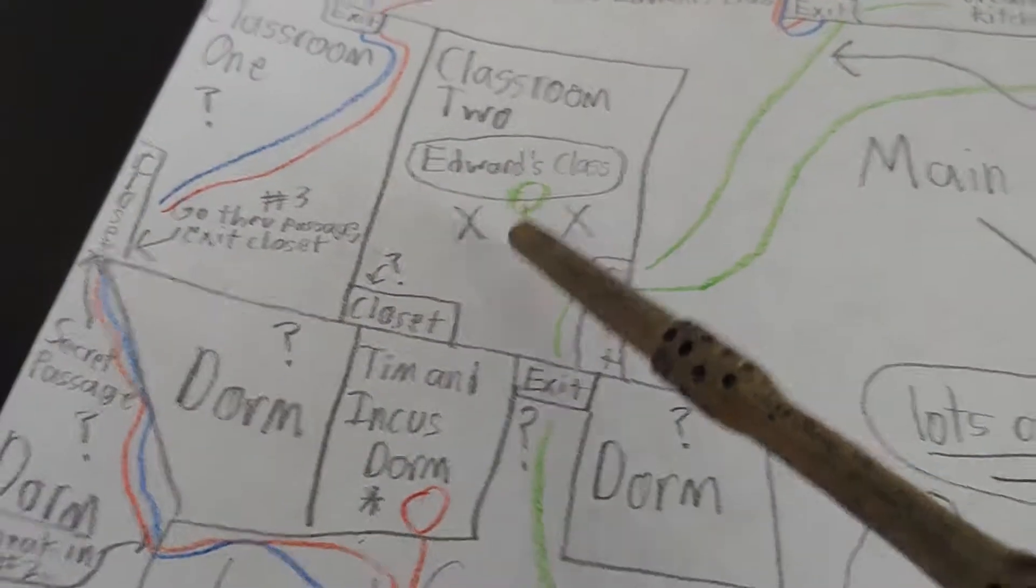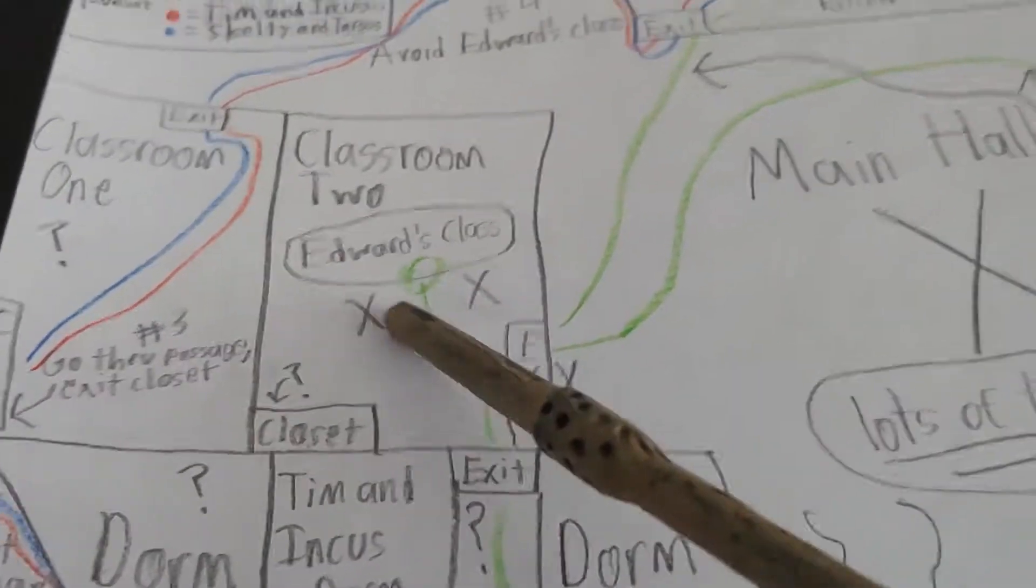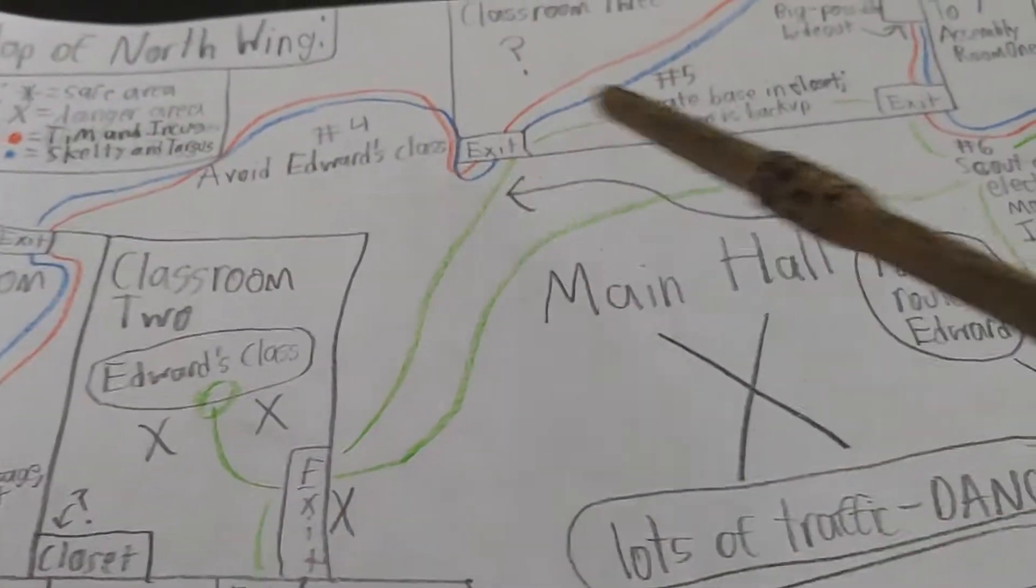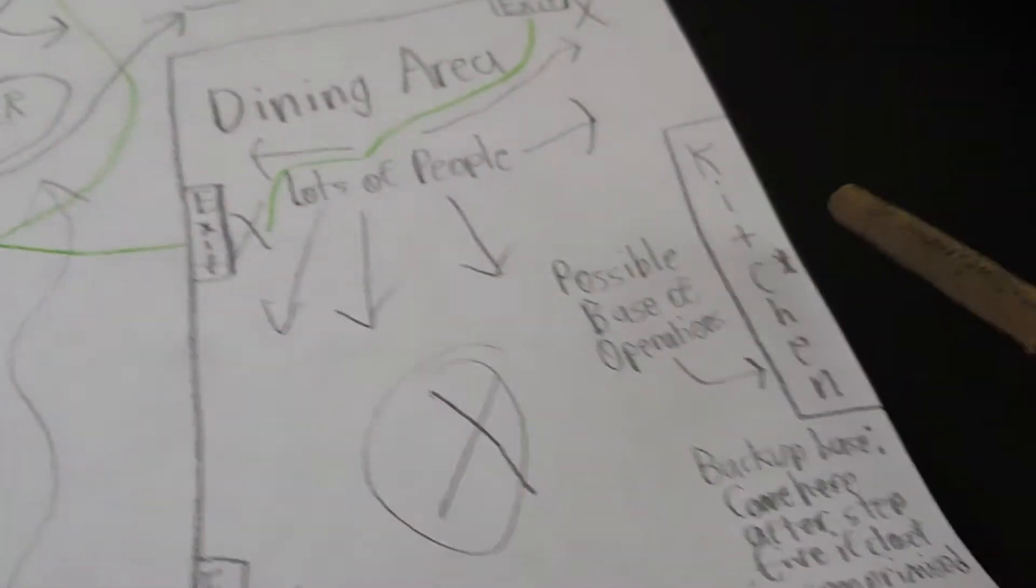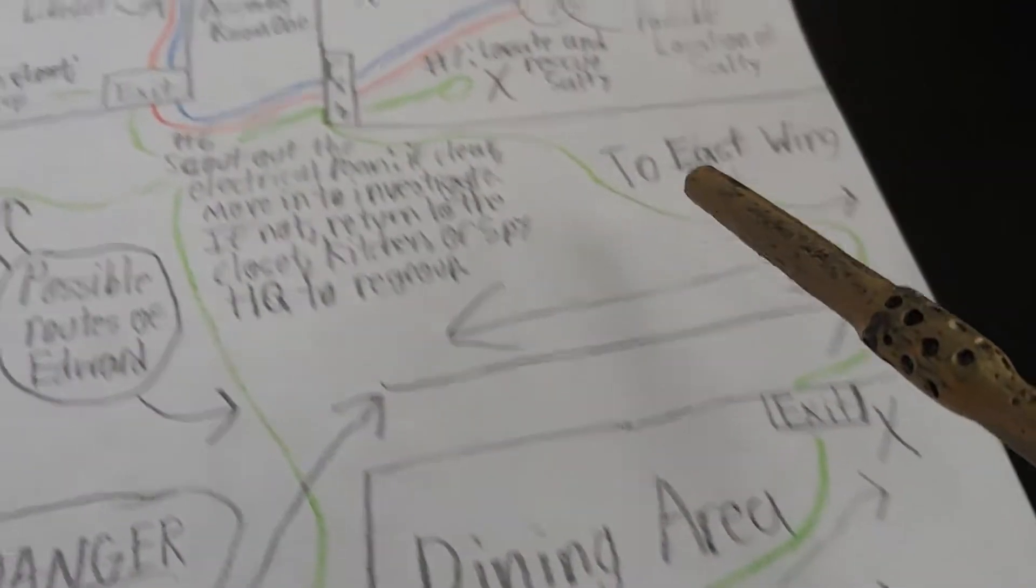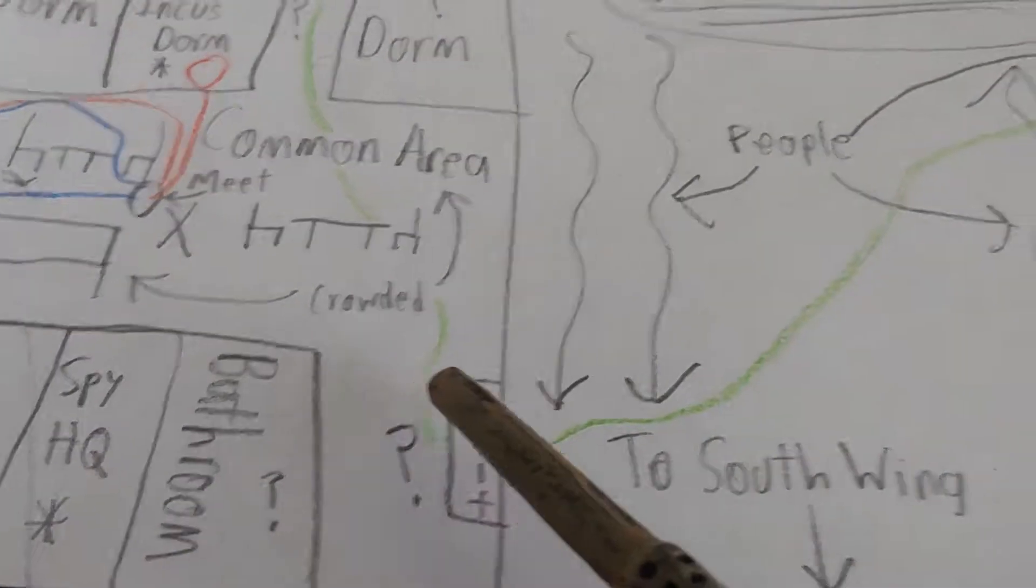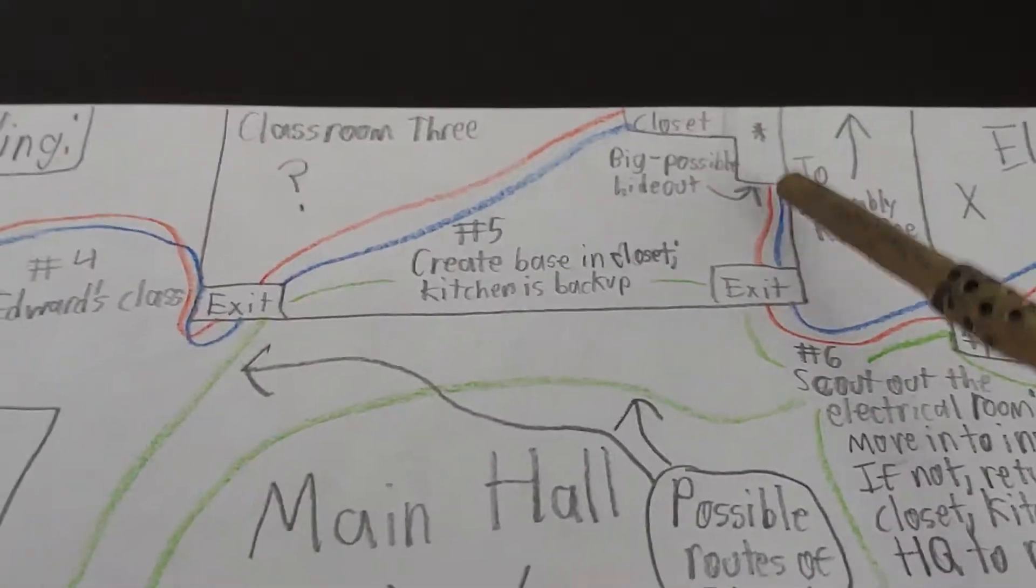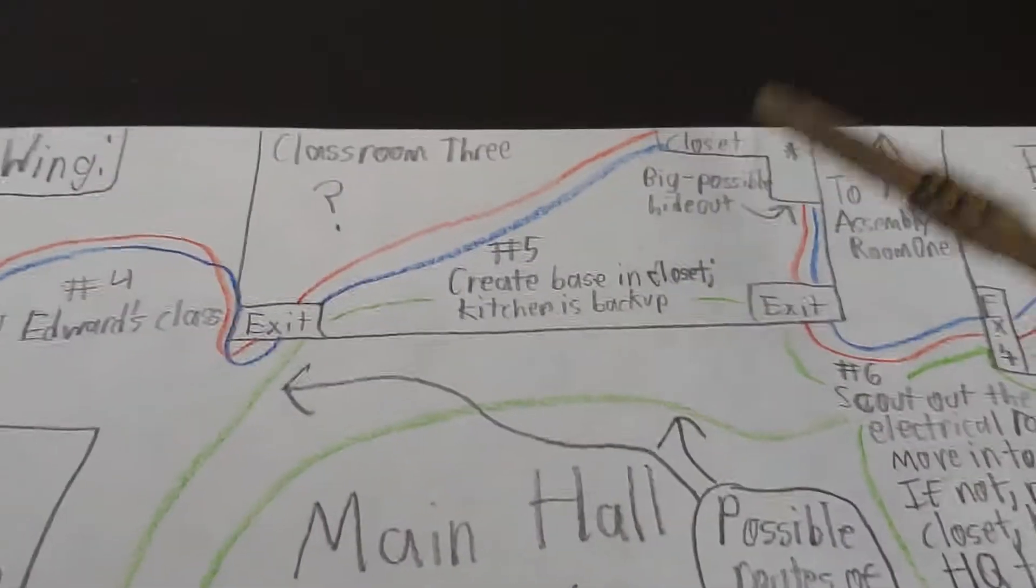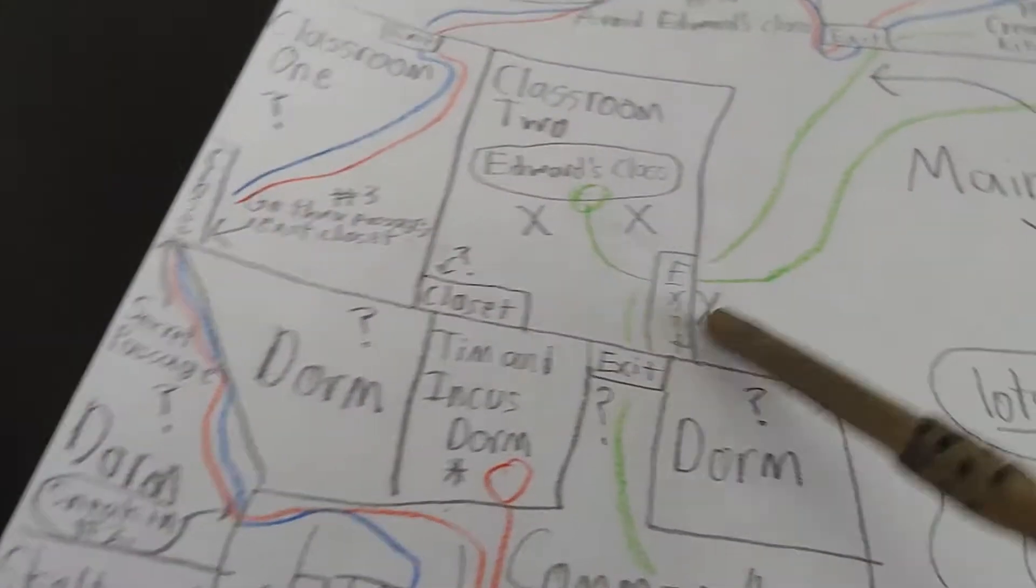He could be suspicious of us, so that's why we have the kitchen as a backup. What we're going to do is wait and see. Once we move into this dorm or get into classroom one, we're going to watch and see what Edward does. If he goes out this exit and starts going to one of these, we'll cut through here behind him and make the base in the kitchen because it's still easily accessible to the electrical room. If he comes down through this common area to one of these lower paths, we'll go up through classroom three following the original plan and go into this closet.